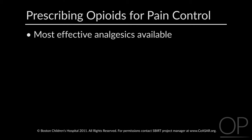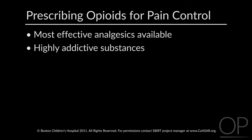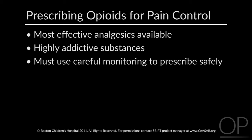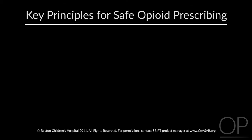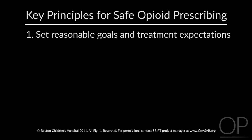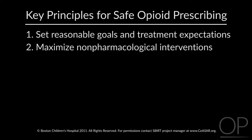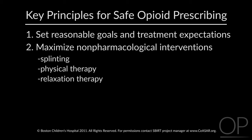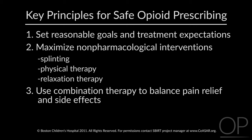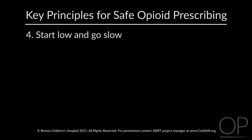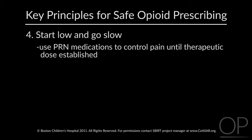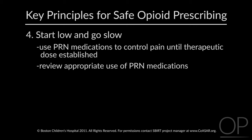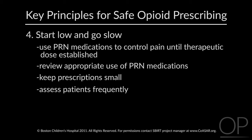Opioids are the most effective analgesics available, but also some of the most addictive substances. With careful monitoring, however, opioids can be prescribed safely. Key principles: first, set reasonable expectations and treatment goals with patients. Second, maximize non-pharmacological interventions such as splinting, physical therapy, and relaxation therapy. Third, use combination therapy to balance pain relief and side effects. Fourth, start low and go slow — use PRN medications for breakthrough pain until a therapeutic dose is established. Advise patients and parents on appropriate PRN use, keep prescriptions small, and assess patients frequently to monitor for pain and signs of opioid euphoria.